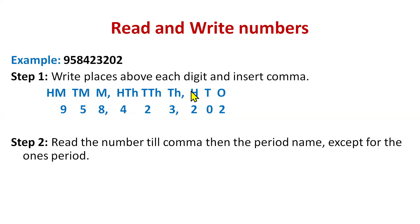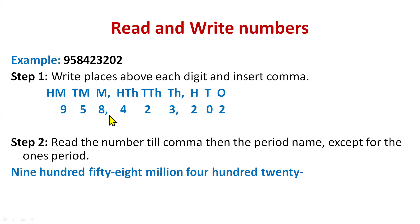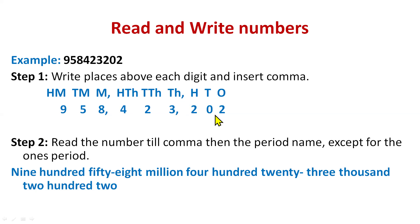The second step is to read the number till the comma and then write the period name. We read 958, and then write 'million'. The exception is for the ones period — we do not write 'ones period'. So the answer is: nine hundred fifty-eight million, four hundred twenty-three thousand, two hundred two.